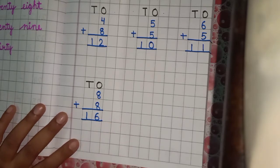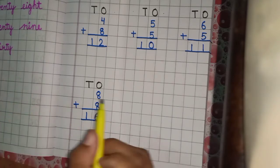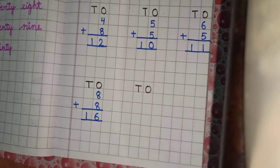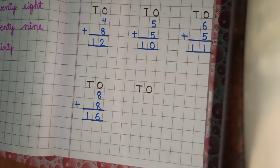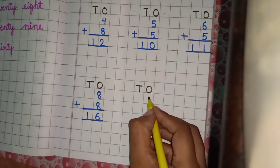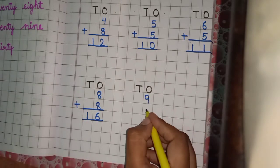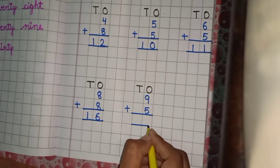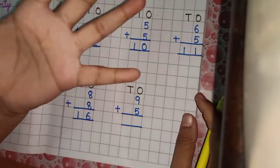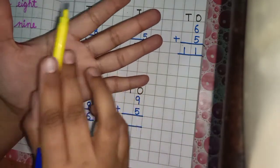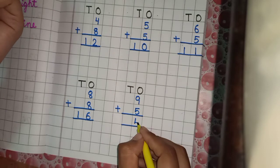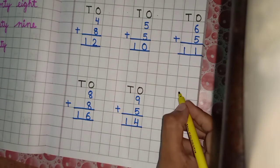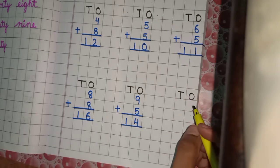Again leave three boxes and write tens and ones. Now write nine plus five, put sign of addition. Keep nine in mind and raise five fingers: ten, eleven, twelve, thirteen, fourteen. Answer is four and one — write four under ones and one under tens.